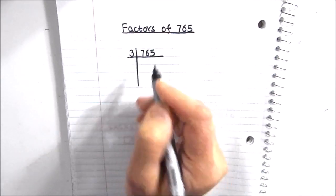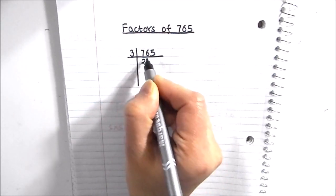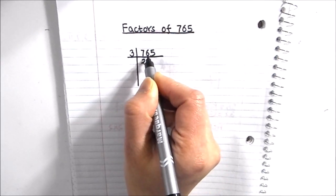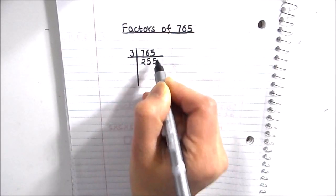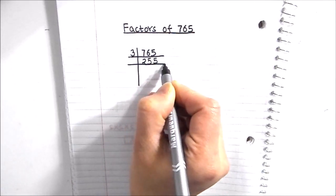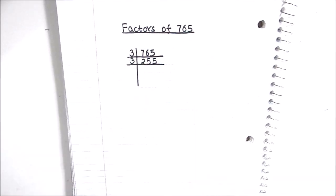Let's try dividing it by 3. 3 times 2 is 6, 1 is remainder, this becomes 16. 3 times 5 is 15, 1 is remainder, this becomes 15. 3 times 5 is 15. We can fully divide 255 by 3.